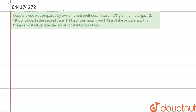Copper oxide was prepared by two different methods. In case one, 1.75 grams of metal gave 2.19 grams of oxide. In case two, 1.14 grams of metal gave 1.43 grams of oxide. We need to show that the given data illustrates the Law of Constant Proportion. Let's see here in the first case.